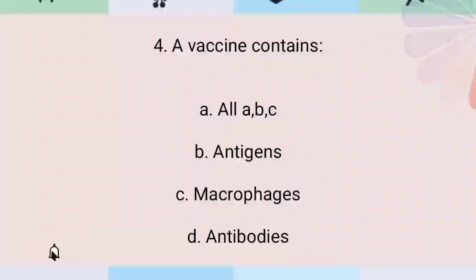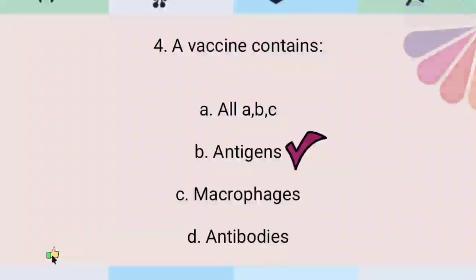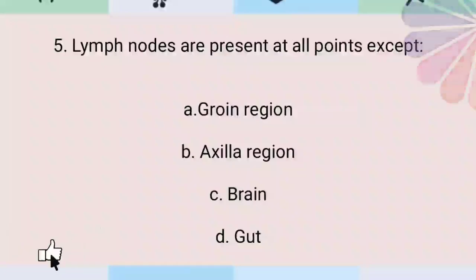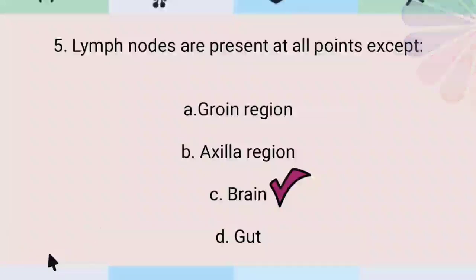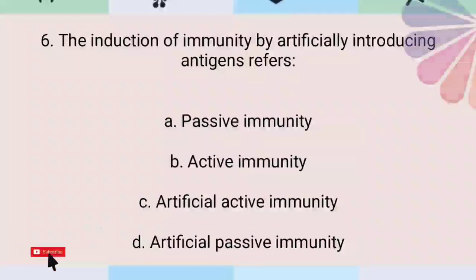A vaccine contains antigens. Lymph nodes are present at all points except the brain. The induction of immunity by artificially introducing antigens refers to artificial active immunity.